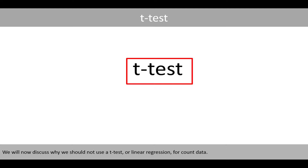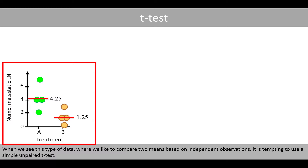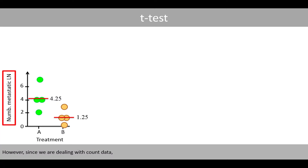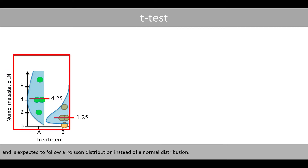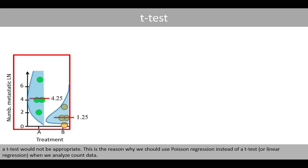We will now discuss why we should not use the t-test or linear regression for count data. When we like to compare two means based on independent observations, it is tempting to use a simple unpaired t-test. However, since we are dealing with count data, which can only take non-negative integer values and is expected to follow a Poisson distribution instead of a normal distribution, a t-test would not be appropriate. This is the reason why we should use Poisson regression instead of a t-test when analyzing count data.